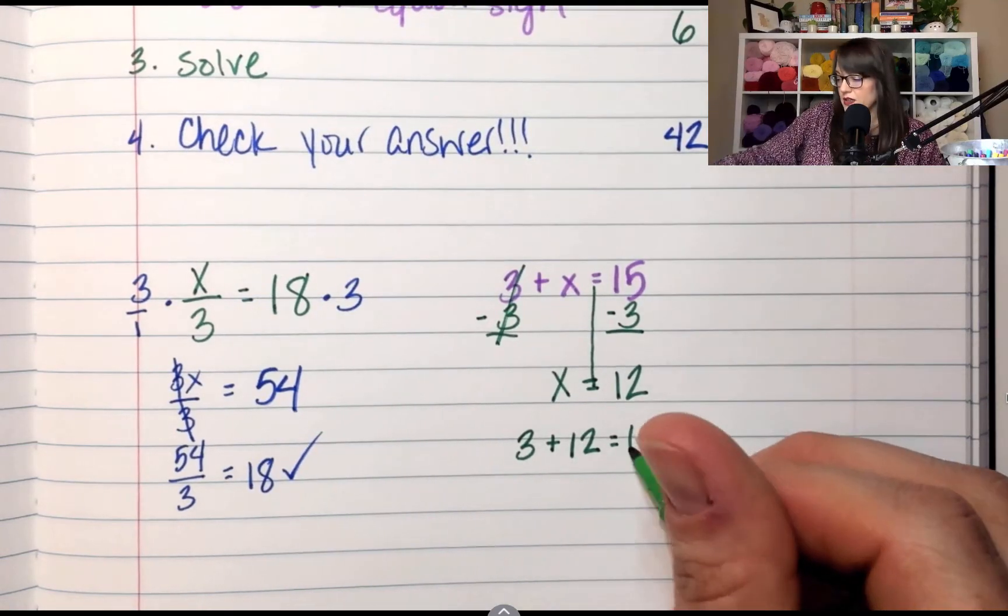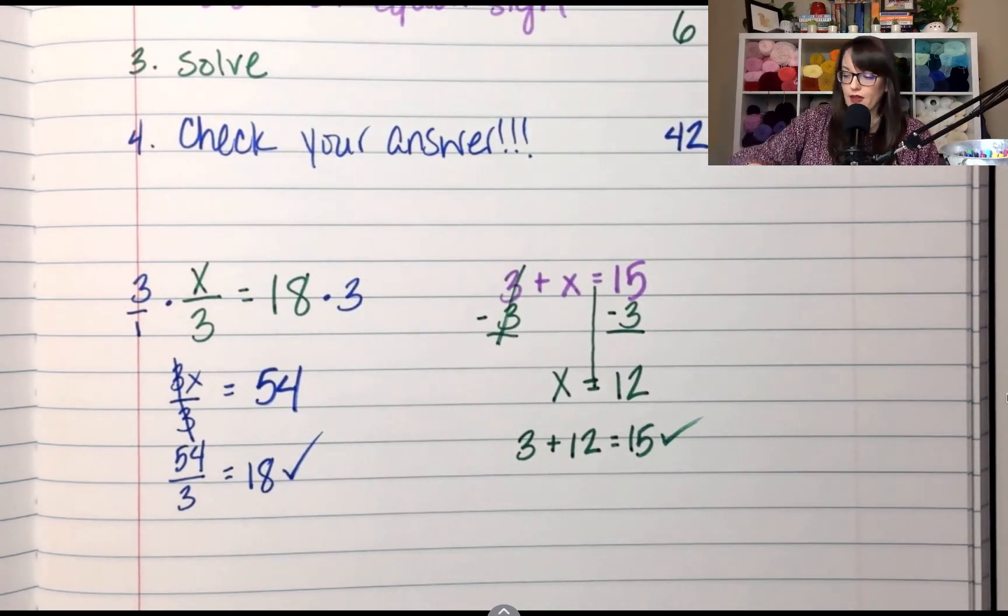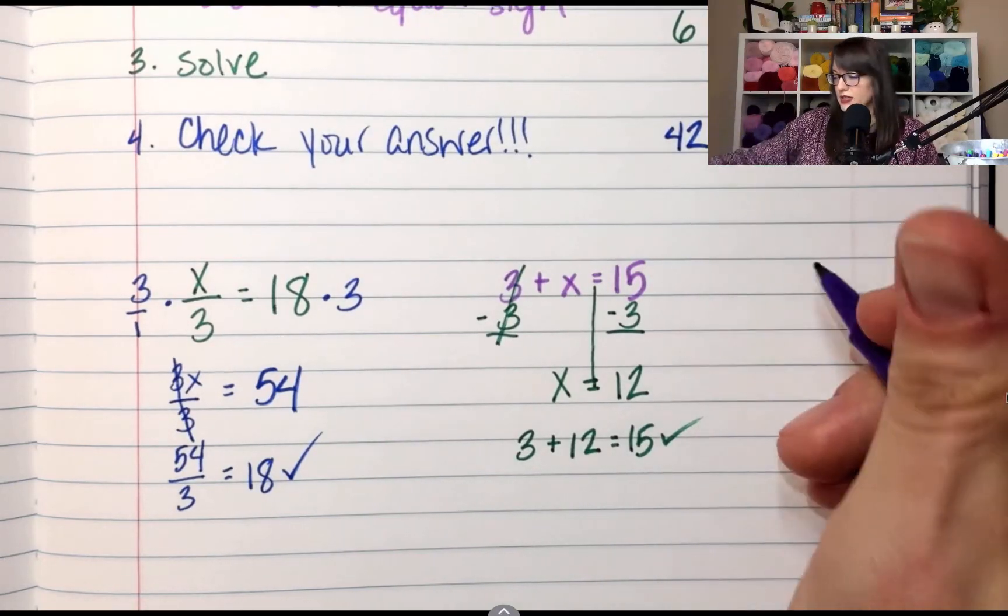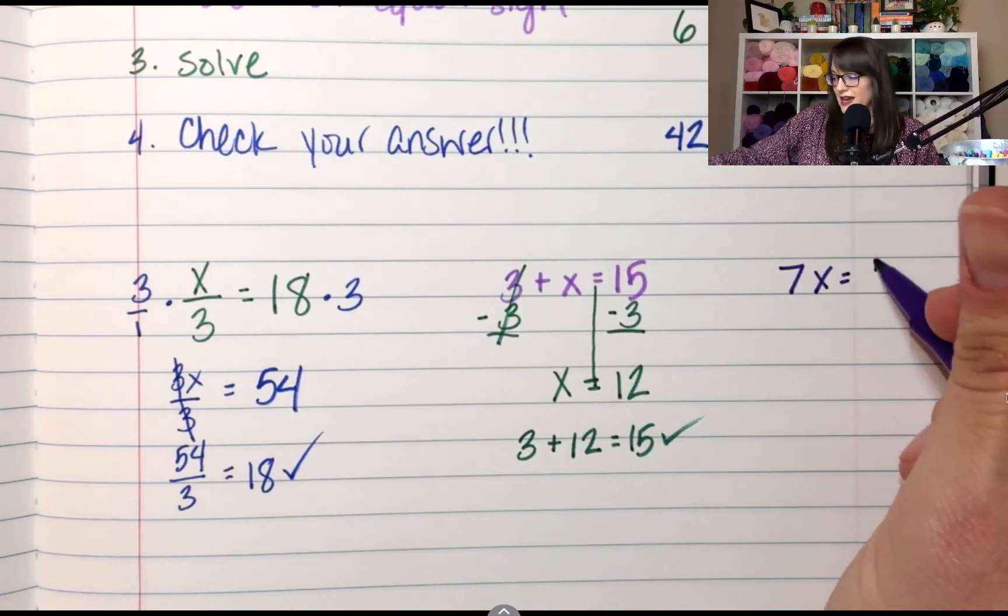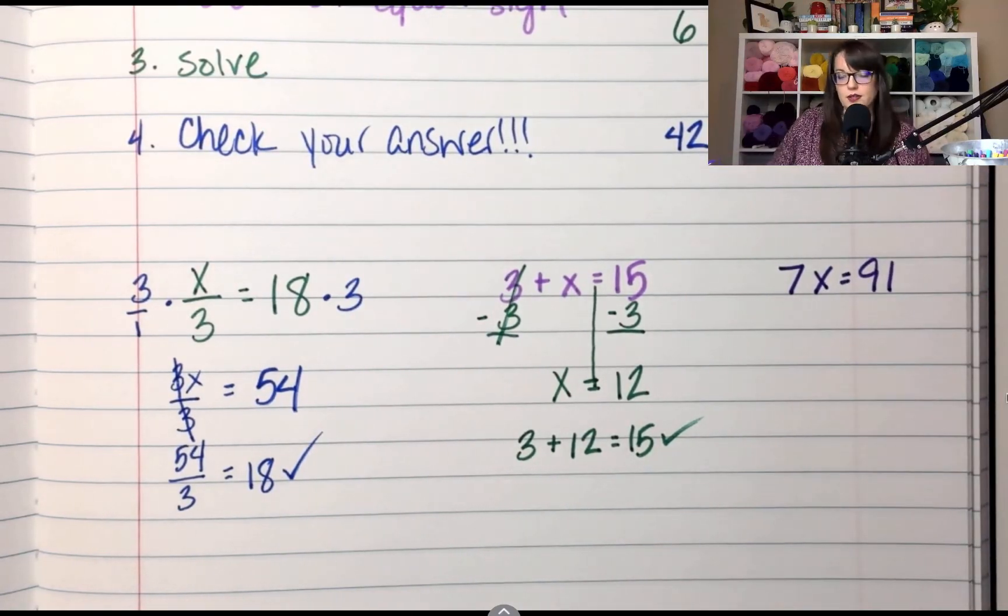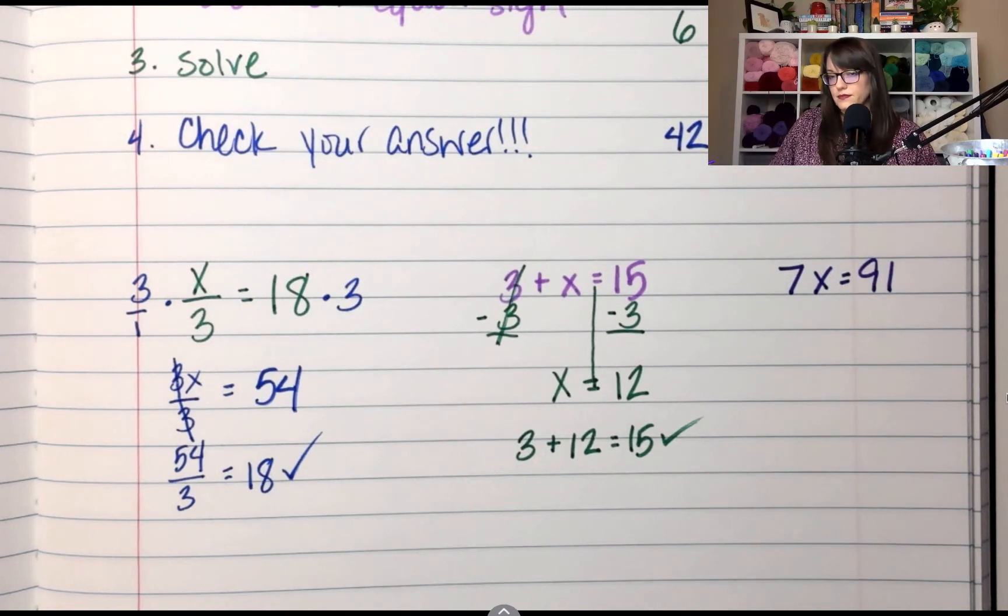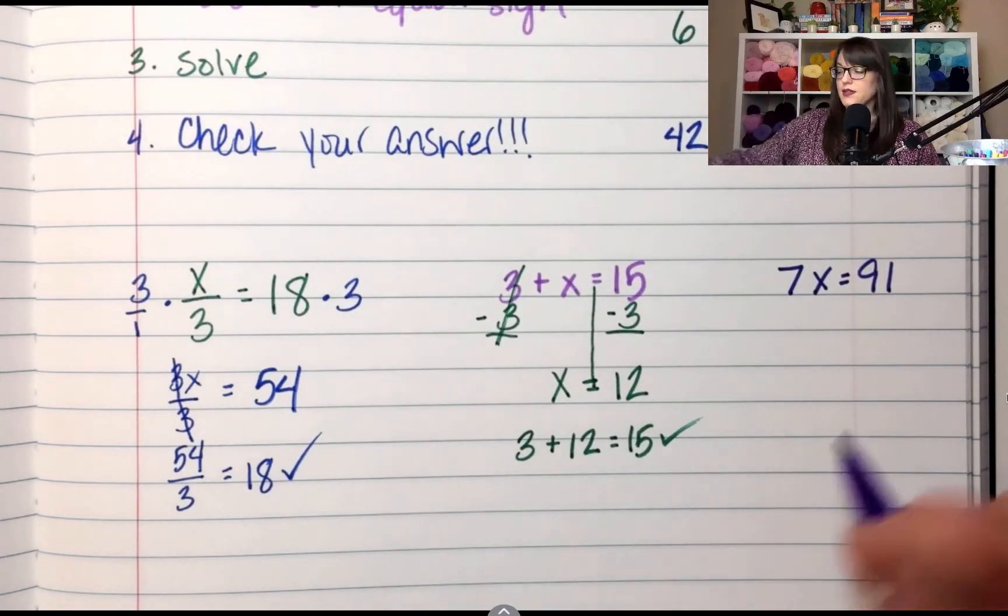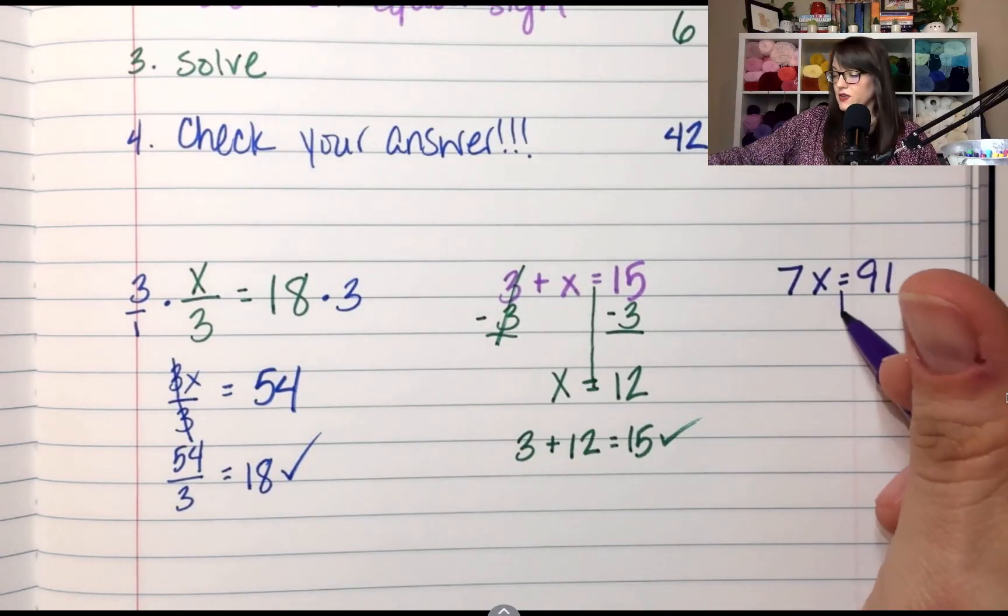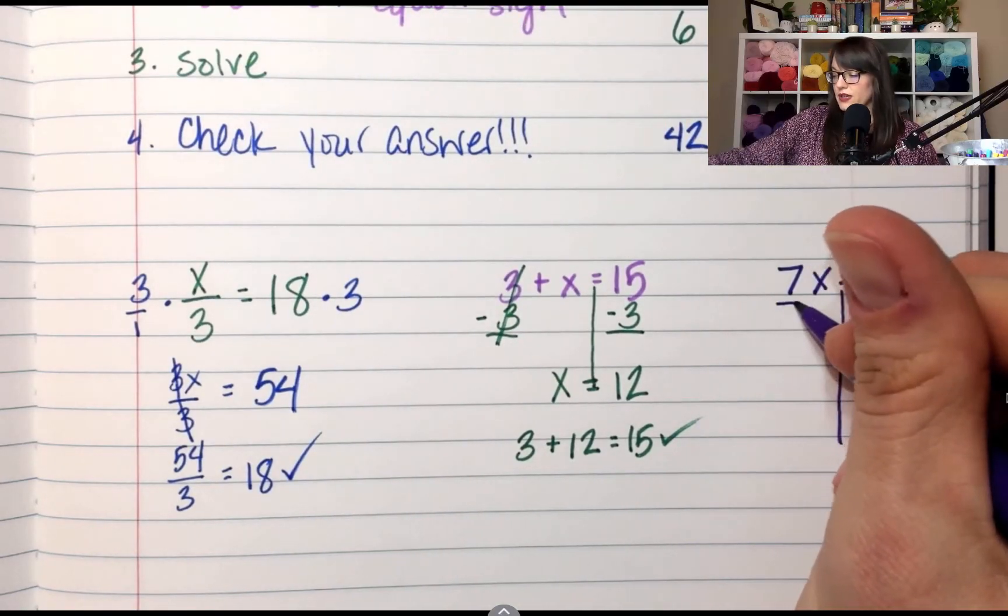All right, let's do another one. I'm trying to hit all the operations. If you have 7X equals 91, what's the operation? It's multiplying. What's the opposite? We're going to divide.